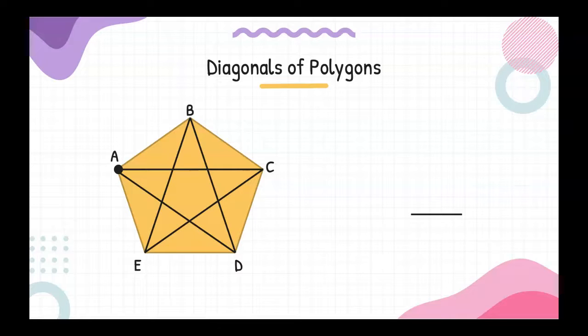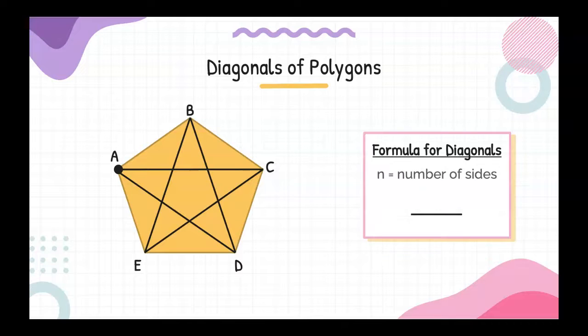You're going to notice each of the N vertices can connect to everything but three other points. When we're starting to make a formula for our diagonals, if we call N the number of sides or the number of vertices, we're going to multiply N by the quantity N minus three.